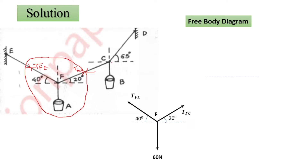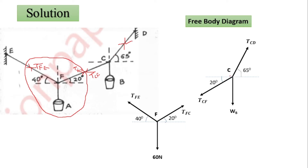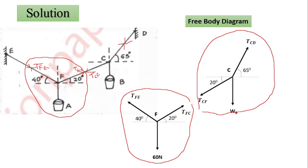Now we go to joint C. We show tension TCF with an angle of 20 degrees. We cut this cable to form the forces at joint C. The weight force WB acts vertically downward — this is the weight of bucket B. The remaining force is tension TCD, whose angle with the horizontal is 65 degrees. In this way we have the first concurrent system at joint F and the second concurrent system at joint C, containing TFE, TFC, TCD, and WB — four unknowns in total.